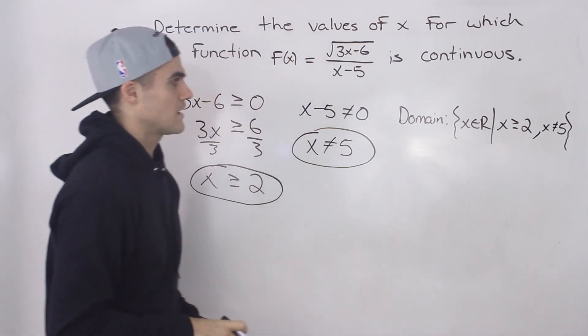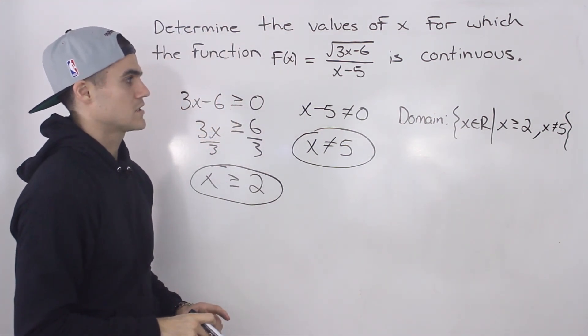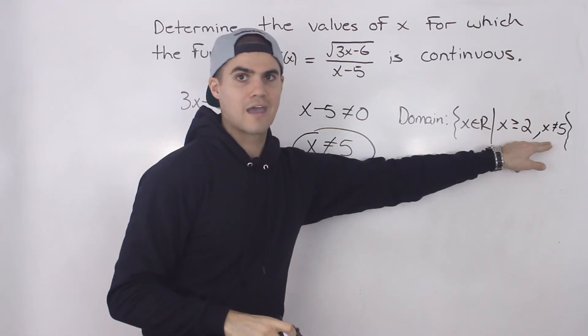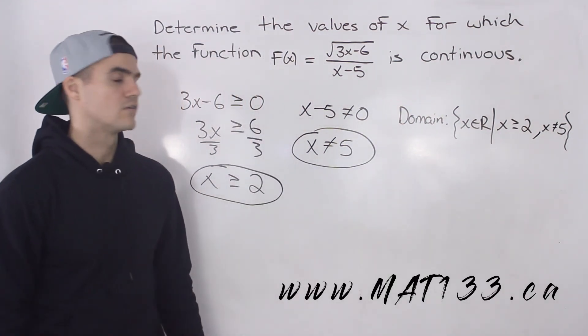And then for all other x values, we're all good. The function is going to be continuous. So it has to be greater than or equal to 2 and it can't equal 5.